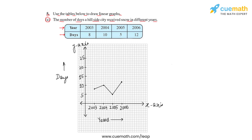Whenever we are drawing a line graph, we'll have to mention the scale of both axes. If we observe the x-axis, the scale would be — as we see here, these small squares, there are five of them, they represent one unit. So we can say that on the x-axis, five units represents one year.